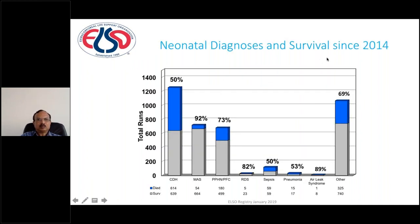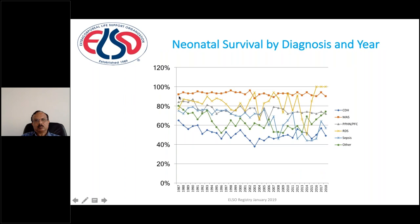Looking at neonatal diagnosis with survival data from 2014: CDH has approximately 50% survival. Meconium aspiration has the biggest survival rate at almost 92% - as Sunil said, if you put the baby on ECMO early on, by the fourth or fifth day they come off ECMO. PPHN is 73% survival. Sepsis has 50% survival. Overall neonatal ECMO survival rate is 73%, which is the best outcome compared to any other age group, even now. The congenital diaphragmatic hernia has been around 50% over a long period of time and this outcome has probably not changed much.